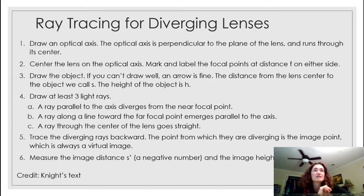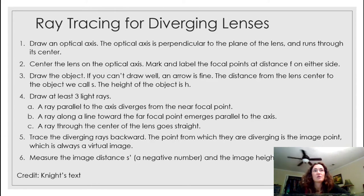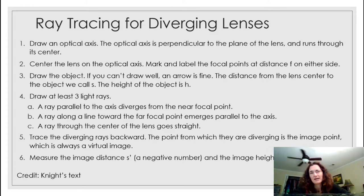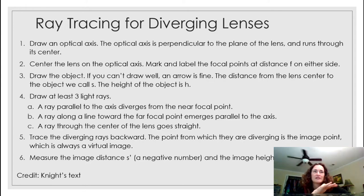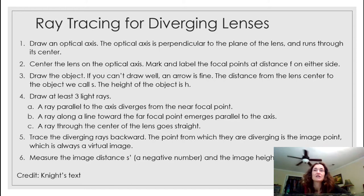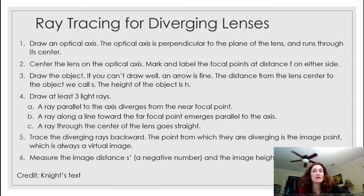For diverging lenses, draw three light rays — slightly different from before. The first ray is parallel to the axis and diverges from the near focal point. The second is along the line towards the far focal point and emerges parallel to the axis. The third goes through the center of the lens and straight through. Trace the rays — they'll diverge on the far side. Trace them backward; the point from which they appear to diverge is your image point, and it's always a virtual image. s prime is negative because it's on the same side as the object.